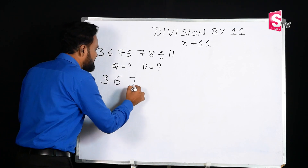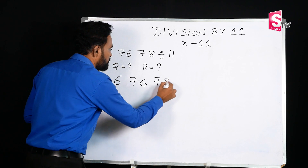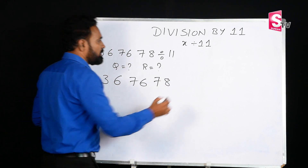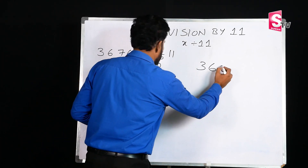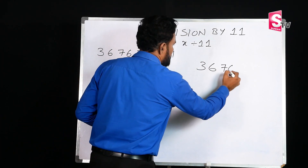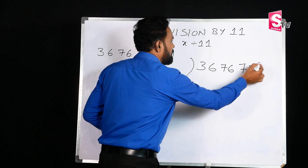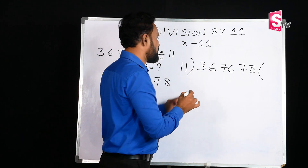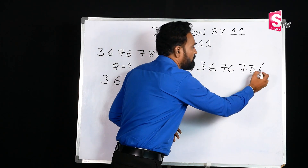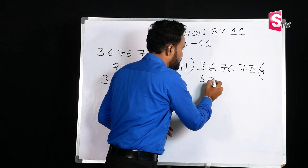The question is 367678 divided by 11. We will check the school method. 11 times 3 are 33.